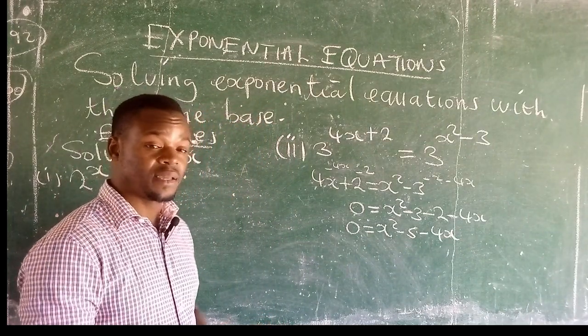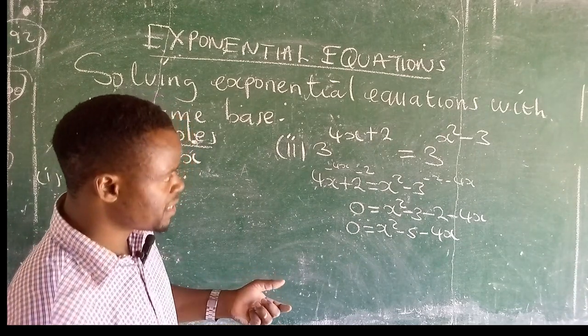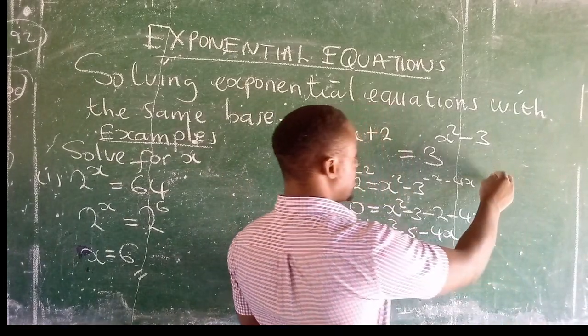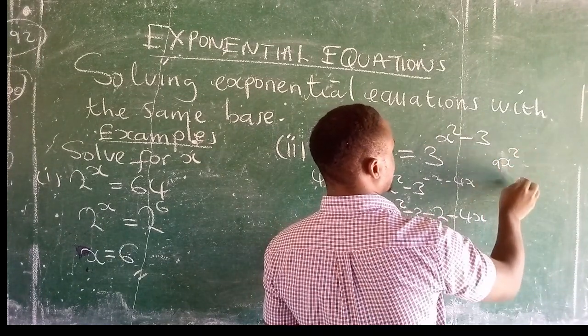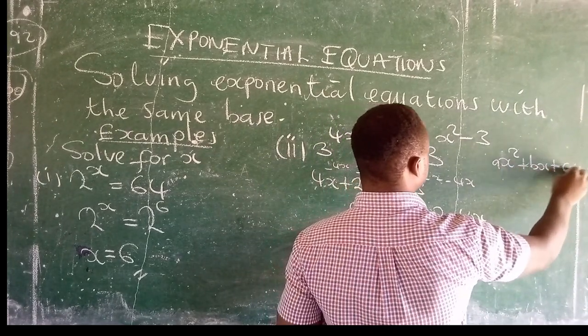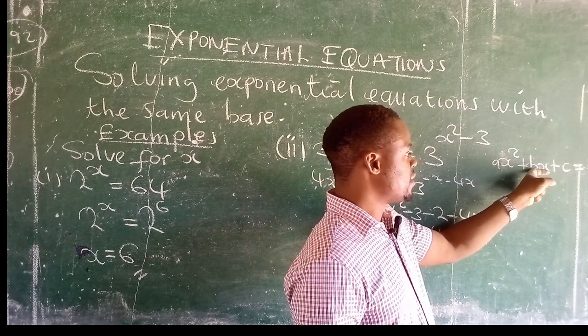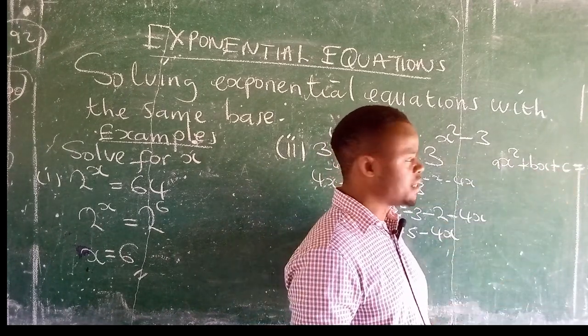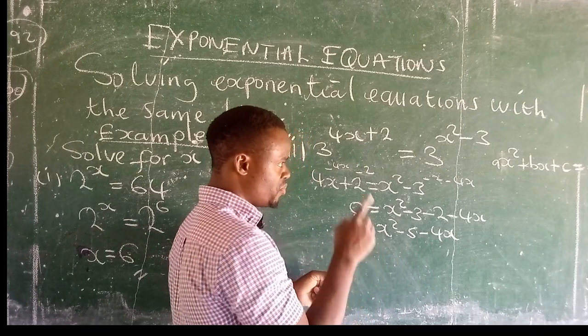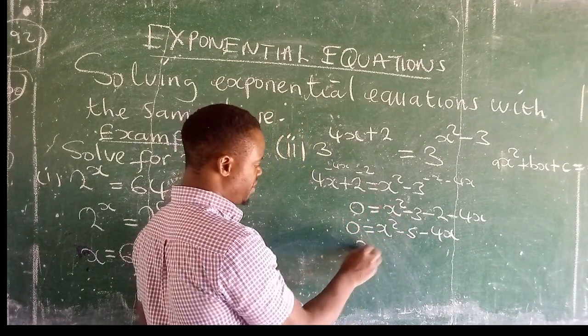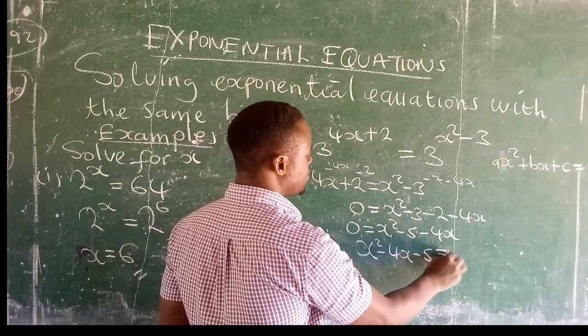Now, what we have is a quadratic equation. There's a standard format in which a quadratic equation has to be written. The standard format works like this: ax squared plus bx plus c is equal to 0, where a, b, and c denote constants. So we can have it rewritten, say x squared minus 4x minus 5 is equal to 0.